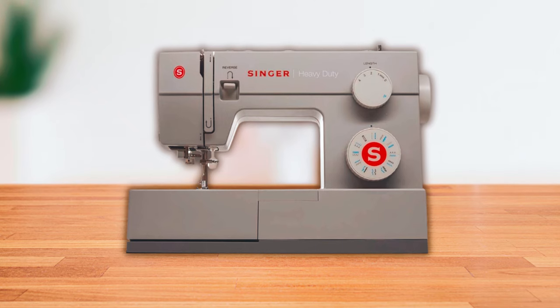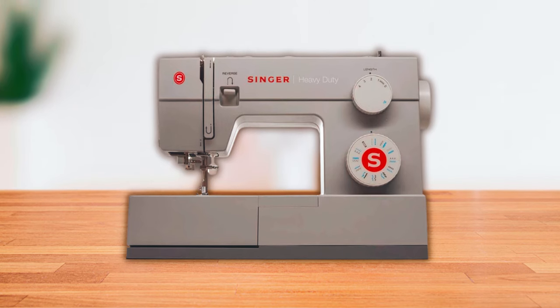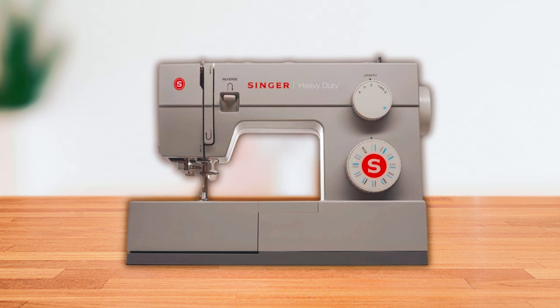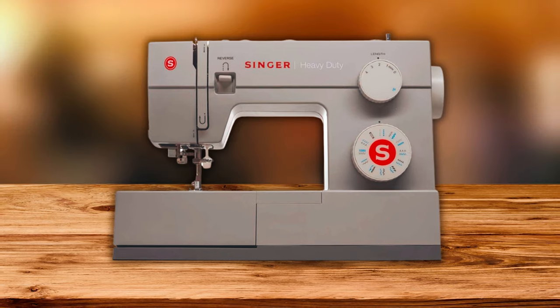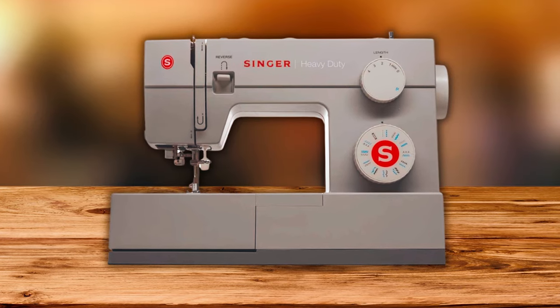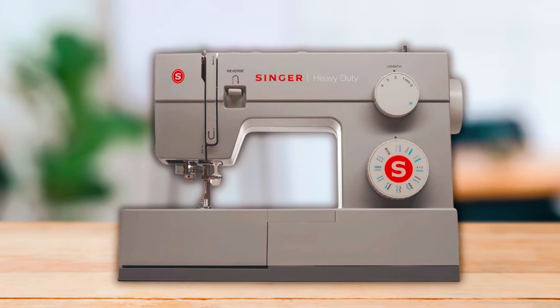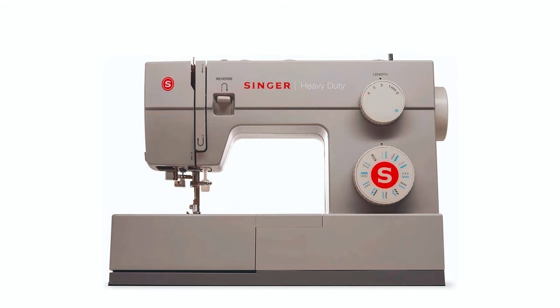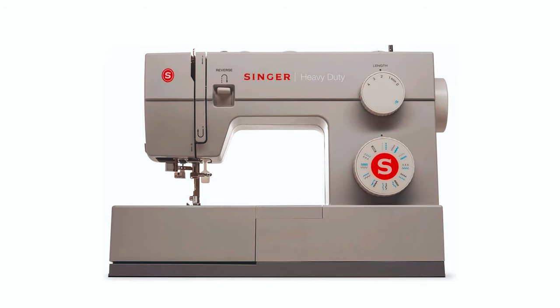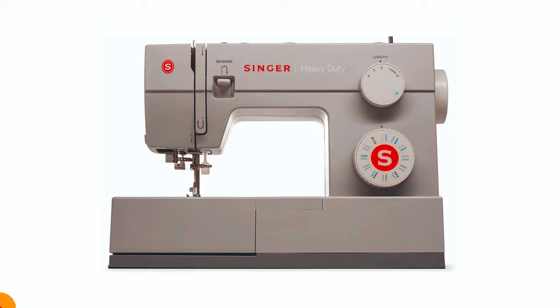There are 23 built-in stitches including a basic selection of straight and decorative stitches as well as an automatic one-step buttonhole. You can select your stitch with a simple turn of a dial. The top thread tension is adjustable and there is an automatic needle threader to help you thread the needle. This sewing machine comes with a full range of accessories and a detailed instruction manual in both English and Spanish.